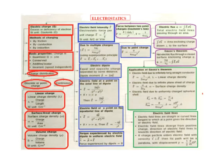Next: torque experienced by an electric dipole in a uniform electric field. The formula is tau vector equals p vector cross E vector, where tau is the torque, p is the electric dipole moment, and E vector is the electric field. The force experienced by a dipole in a uniform field is zero. Next: force between two point charges — Coulomb's law. F equals k·q1·q2 divided by r squared, where k equals 1 divided by 4 pi epsilon naught, q1 and q2 are the two charges, and r is the distance between them.